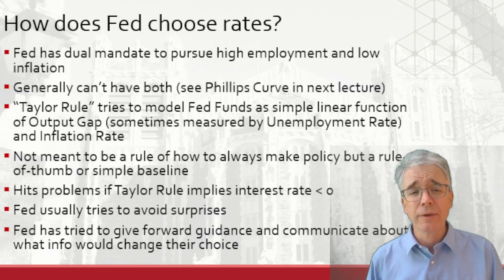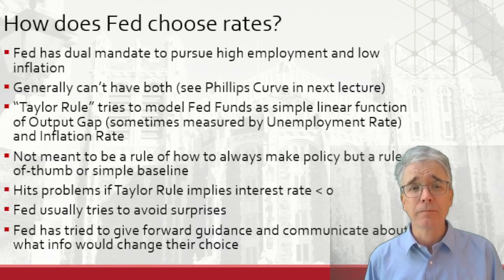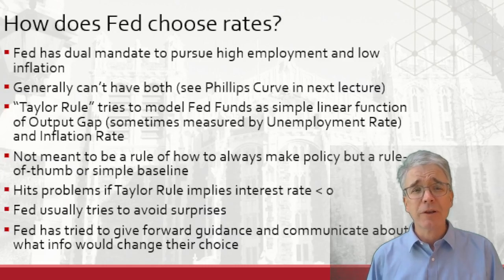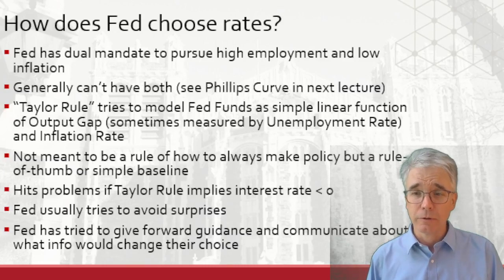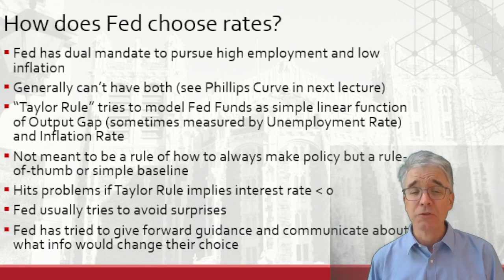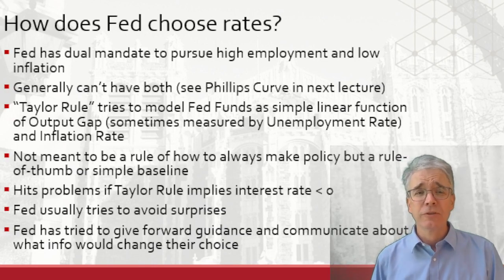How does the Fed choose rates? They have a dual mandate — they're supposed to pursue high employment and low inflation, but generally can't have both of those. We did talk about that trade-off in the Phillips curve. However, sometimes economists discuss the Taylor rule, which is not really a rule. Rather, it's an observation that you can get a pretty decent model of Fed funds rate as just a linear function of the output gap — how far GDP is from potential — and the inflation rate. Recall that the output gap is related to the unemployment rate. The Taylor rule, not a rule, just gives a baseline.